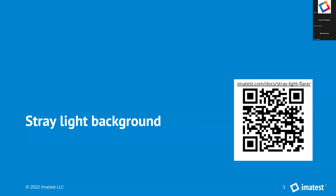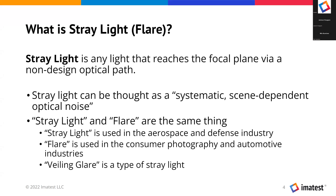Starting with some background: what is stray light? The definition is any light that reaches your focal plane or image sensor via a non-design optical path. That's the definition from upcoming standards such as IEEE P2020. You can think of stray light as systematic scene-dependent optical noise — it will change depending on where the source of light is relative to your camera. Stray light and flare are interchangeable terms used by different communities. Stray light is used by aerospace and defense; flare is used by the consumer photography and, more recently, the automotive industry.